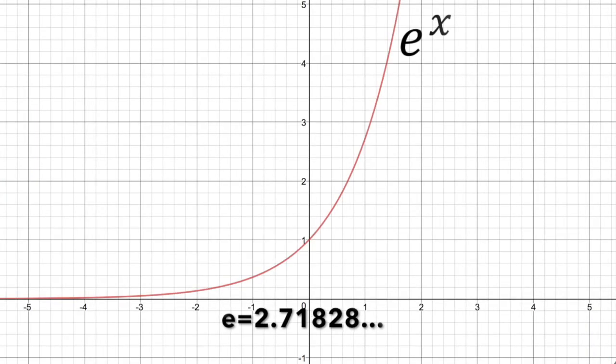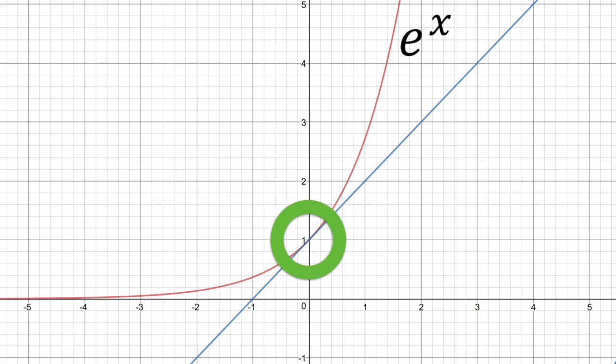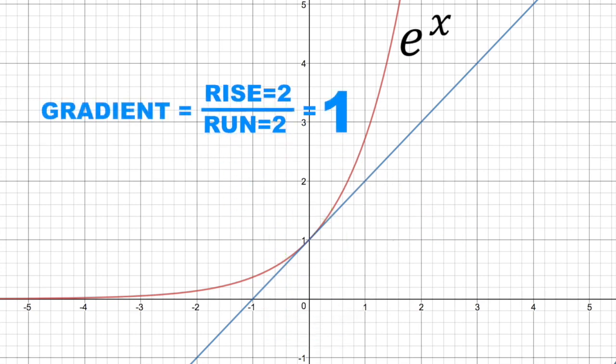E is Euler's number, whose exponential function, or e to the x, has gradients equal to its y-coordinates. So when its y-coordinate is 1, its gradient is also 1.